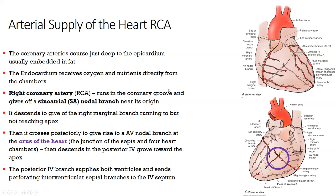The right coronary artery runs in the coronary groove and gives off a sinoatrial nodal branch near its origin — supplying the SA node — then a right marginal branch descending toward but not quite reaching the apex, and then posteriorly the posterior interventricular branch supplying both ventricles. If you had a posterior infarct, the posterior interventricular branch would be the likely culprit. Those are the important parts of the RCA.